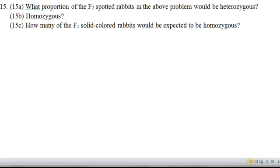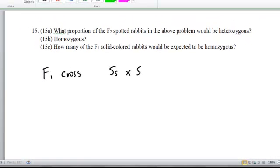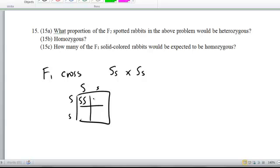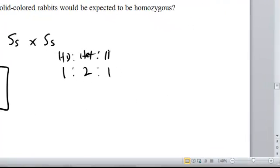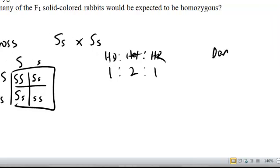So let's consider number 15 then. What proportion of the F2 spotted rabbits in the above problem would be heterozygous? So if you do that F1 F1 cross again, when you think about that cross, we can do the Punnett square if we really want to sort this out. So we get that 1 to 2 to 1 homozygous dominant to heterozygous to homozygous recessive proportion and dominant phenotype to recessive phenotype is a 3 to 1 proportion.